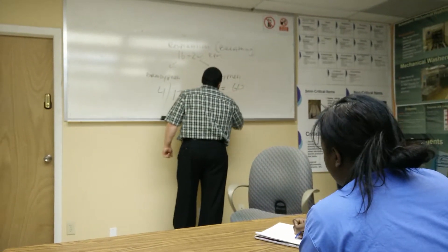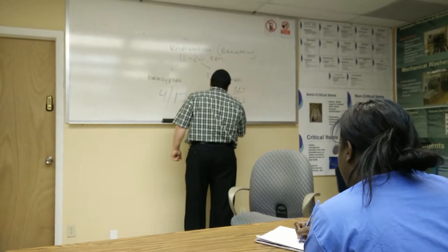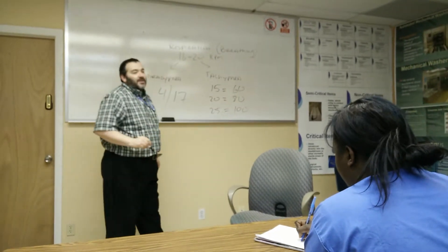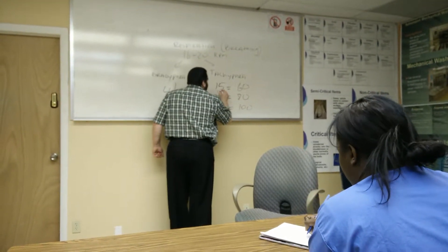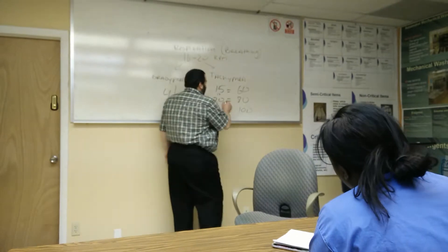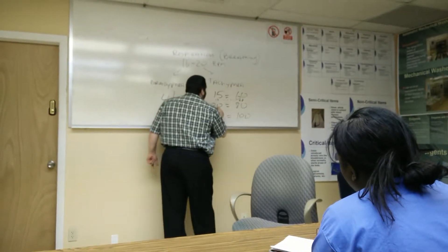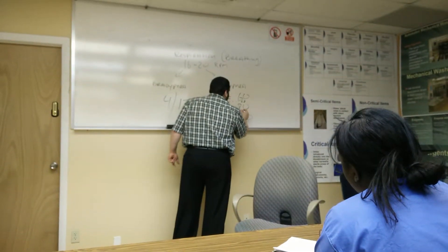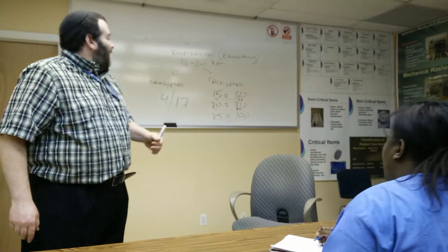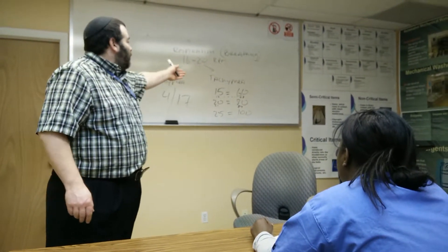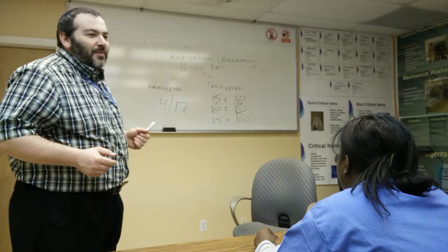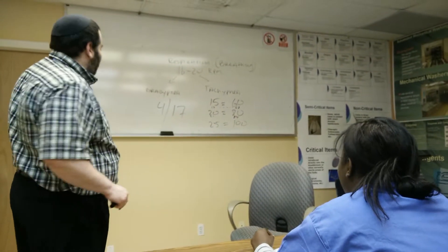Here's an easy shortcut: 15 counts is always 60 per minute. 20 is always 80. 25 is always 100. For anything in between, just add or subtract from the nearest landmark — so 17 is 60 plus 2 times 4, which equals 68. If you counted 21, that's 80 plus 4, so 84. No multiplication needed. Just break it down: 15, 20, 25.